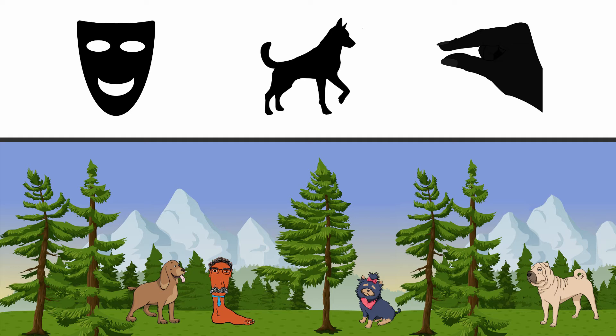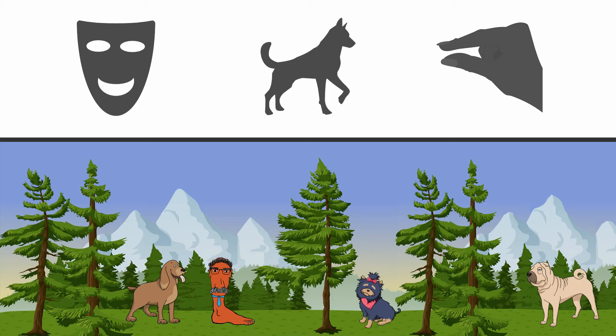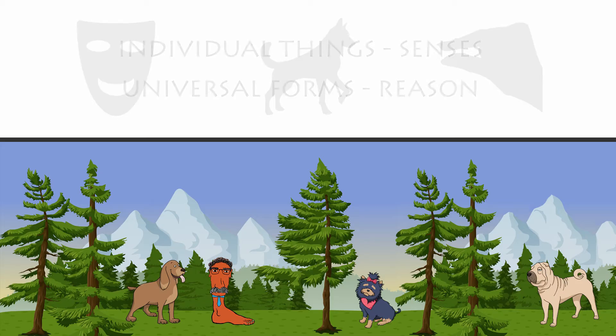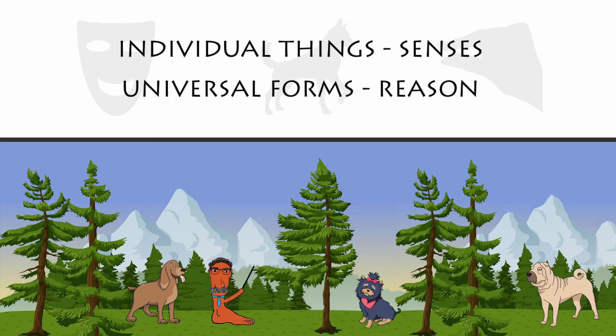Forms or ideas, as their name implies, are ideal. They cannot be found in material reality. When you see a happy dog, you see it with your eyes — you see an individual dog. Similarly, if the dog is dirty, you can smell it; when it barks, you can hear it. Individual things, such as a dog, and their characteristics, such as their happiness, are accessible through our senses. They are material sensibles.